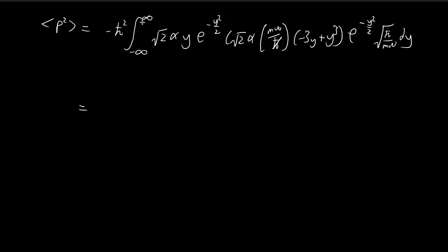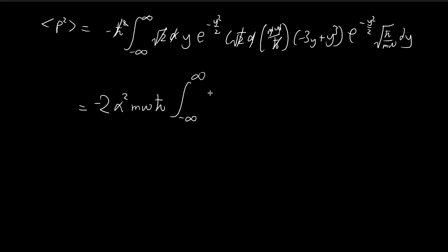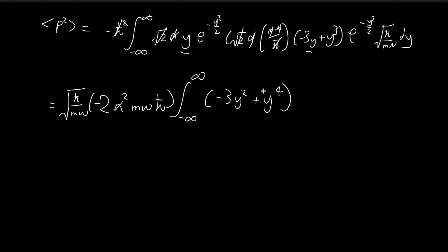We can group up the constants: the square root of 2 terms, the alpha terms combine into alpha-squared, the ℏ-bars cancel out, and including the negative sign we get mωℏ. After dealing with all the constants, we're left with the integral of negative 3y-squared plus y to the power of 4, times e to the power of negative y-squared dy. Don't forget the square root normalization terms. Both exponentials multiply together giving e to the power of negative y-squared dy. So we are faced with two integrals: one with y-squared times e to the negative y-squared, and one with y to the fourth times e to the negative y-squared.